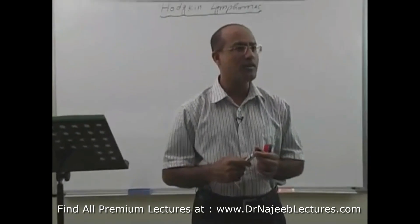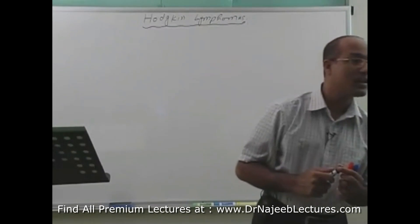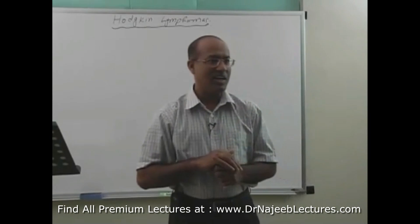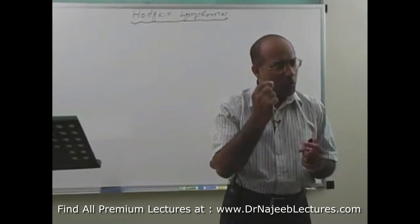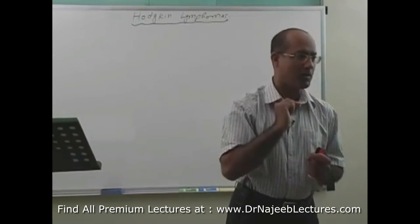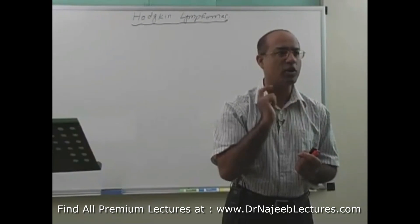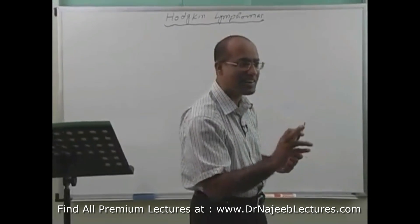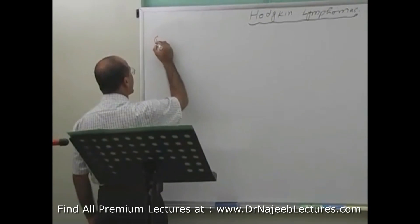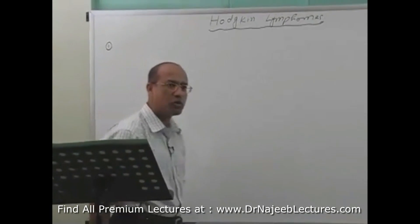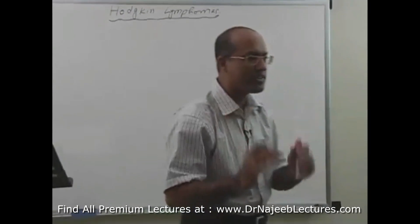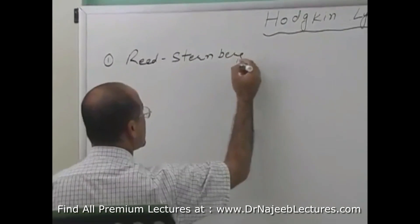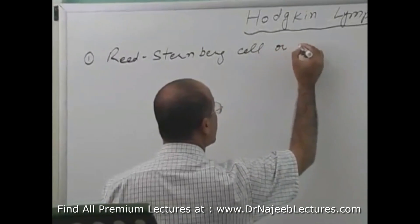How do you define Hodgkin's lymphoma? The most important thing a student can say about Hodgkin's lymphoma is that there are special cells called Reed-Sternberg cells. That is what a student will talk about. But a teacher will say something different. One of the very important things about Hodgkin's lymphoma is that these tumors are characterized by the presence of a special cell called the Reed-Sternberg cell or its variants.